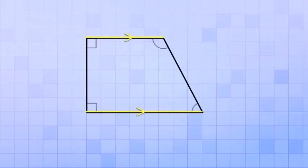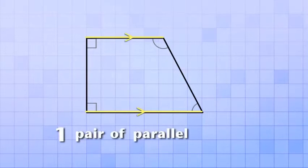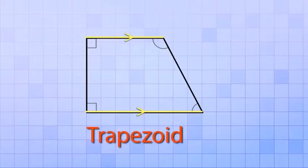Now, one of the pairs of sides is still parallel, but the other is not. And a quadrilateral that has only one pair of parallel sides is called a trapezoid.